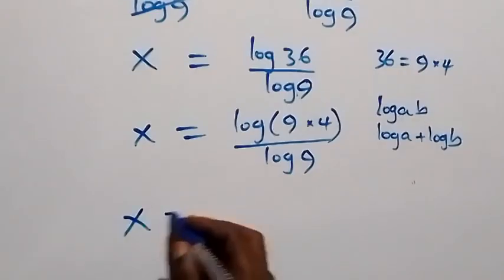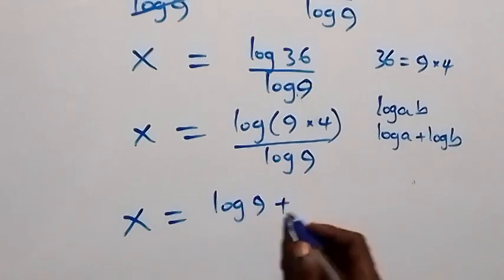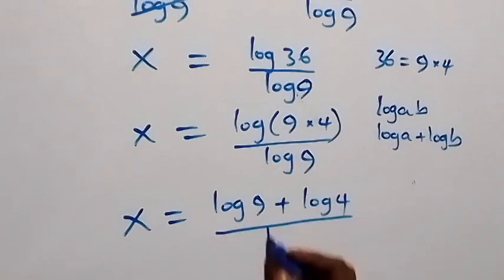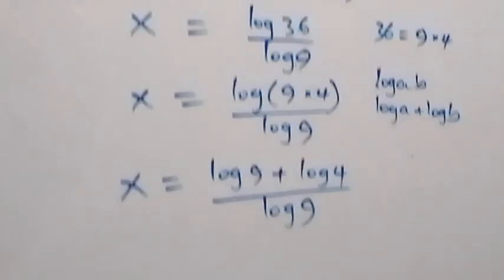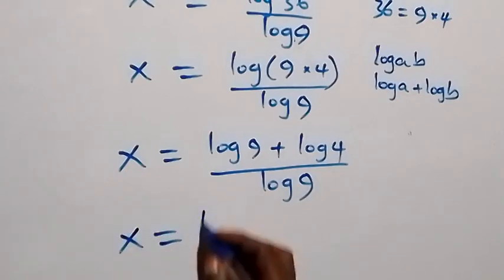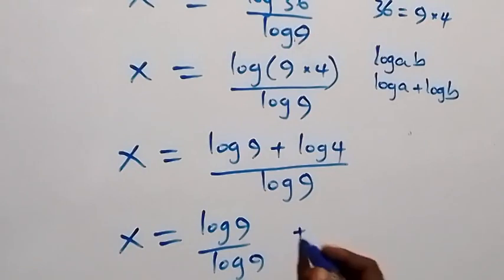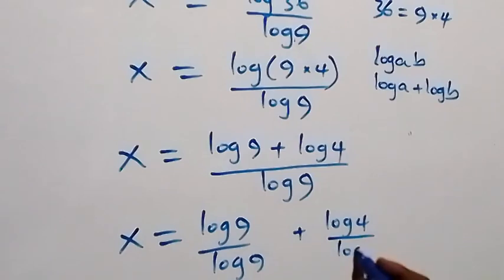So what we have becomes x equals to log 9 plus log 4 over log 9. We can separate this fraction into two fractions, and this becomes x equals to log 9 over log 9 plus log 4 over log 9.